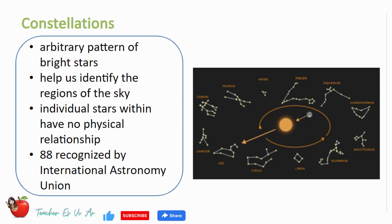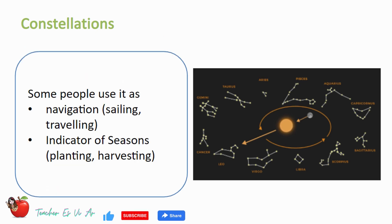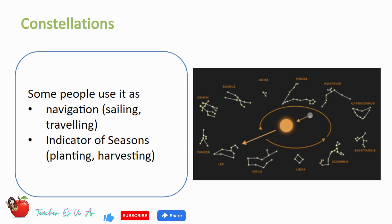Let us first define what constellations are. Constellations are arbitrary patterns of bright stars. It helps us identify the regions of the sky. Its individual stars within it have no physical relationship. There are 88 recognized constellations by the International Astronomy Union. Some people use constellations as navigation during sailing and traveling.